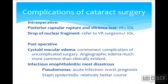The main postoperative complication of uncomplicated cataract surgery is cystoid macular edema, also called Irvine-Gass syndrome, where there is leakage from macular capillaries and thickening of the fovea leading to decreased best-corrected visual acuity. Angiographic changes of macular edema are common after cataract surgery but do not always translate into clinical cystoid macular edema. The most disastrous postoperative complication is infectious endophthalmitis — an infection and abscess of the inner layers of the retina and vitreous. Acute Pseudomonas infection has the worst prognosis, while Staph epidermidis has a relatively better course.